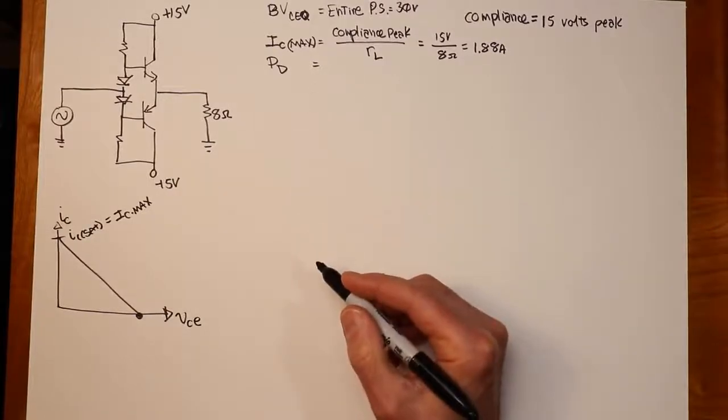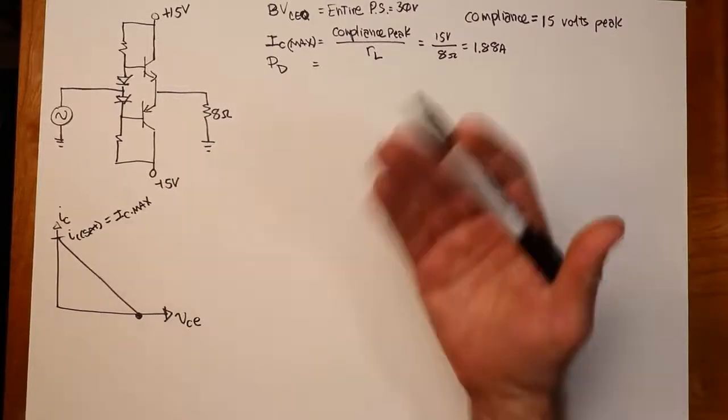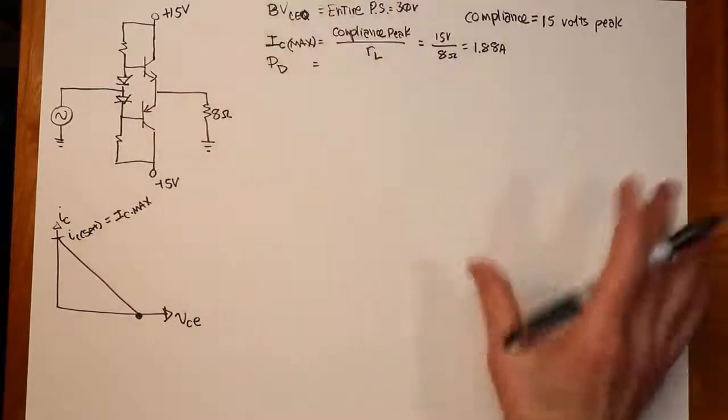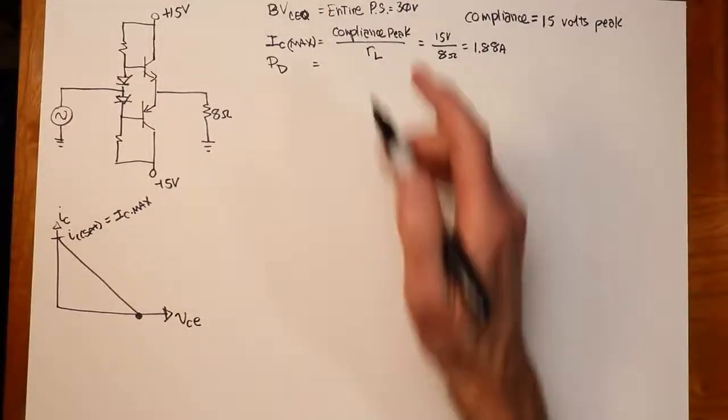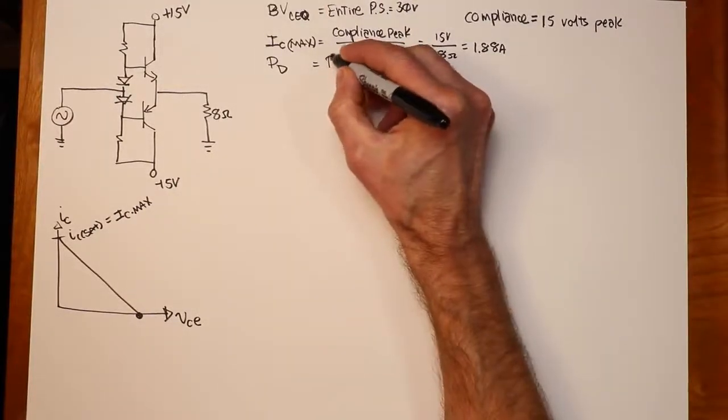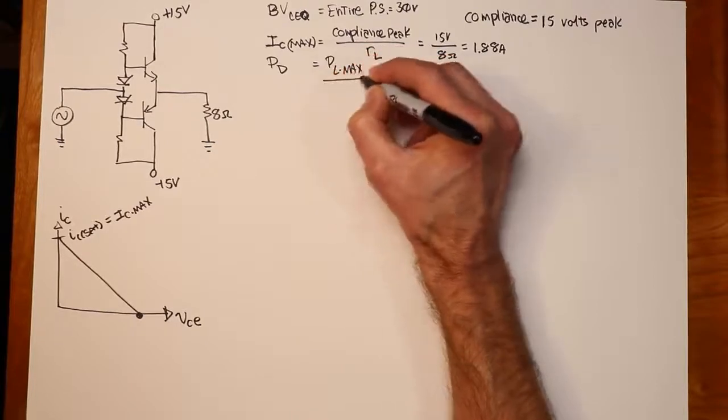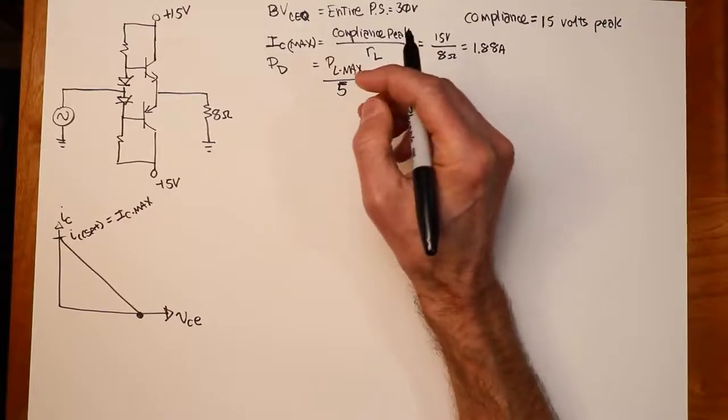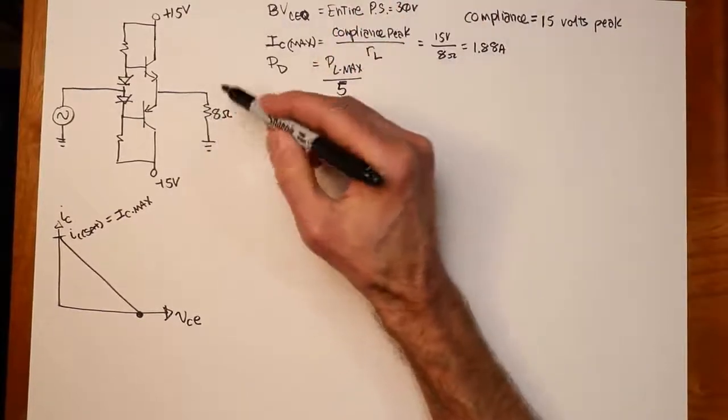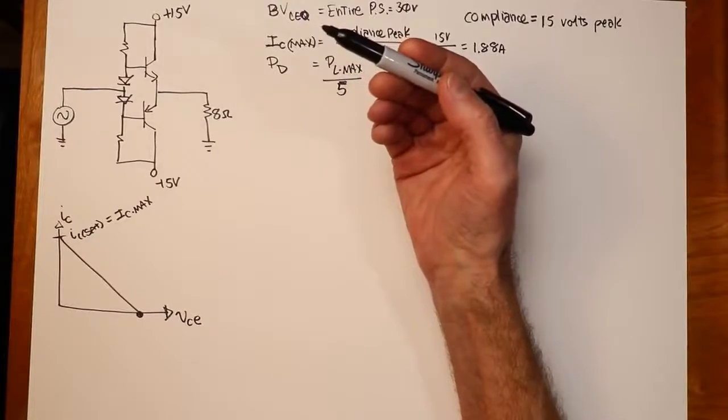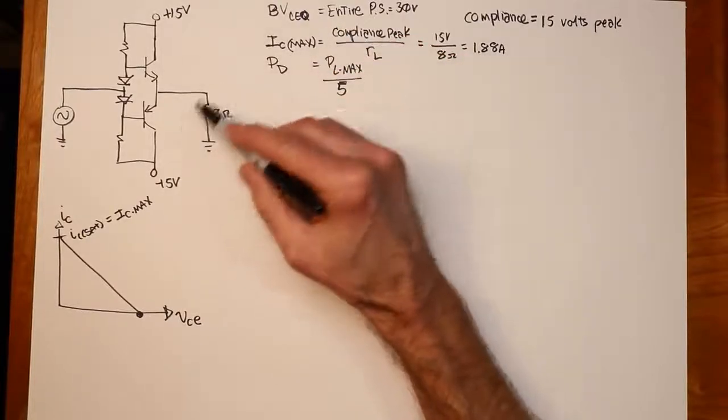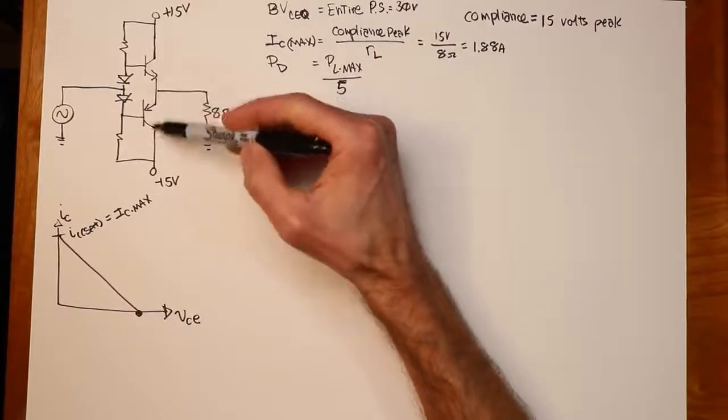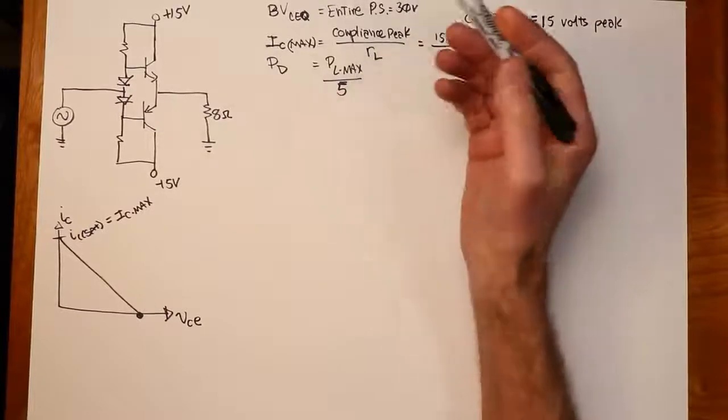All right? Now the power dissipation. Well, the proof of the power dissipation is fairly long. It is in the text. It's a little too long for us to go through here. And I'll just give you the final answer, which is that this is equal to your P-load max divided by 5. Now there's a caveat with that, which is that that assumes we have a purely resistive load and we're not overdriving the amplifier.